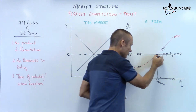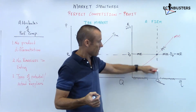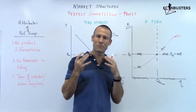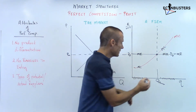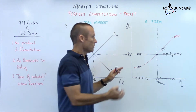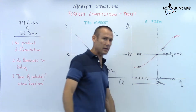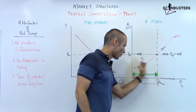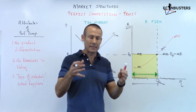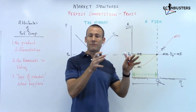Once MC gets above MR, don't produce those units. That gives us our profit-maximizing quantity, Q profit max. When you see a dashed vertical line on these graphs, they're trying to show you that horizontal distance — that is the quantity where the firm profit maximizes.